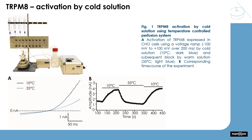solution was cooled to 10°C and used to activate TRPM8 expressed in CHO cells. In panels A and B, solution was first cooled to 10°C to activate TRPM8 and then heated to 35°C, which reversed the activation. Following this, TRPM8 was activated a second time using cooled solution at 10°C.